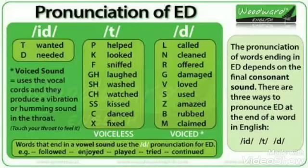This is assimilation of voicing — the coordination of voicing. Voiceless is followed by voiceless, voiced is followed by voiced. If the verb ends with a voiceless sound, we use the voiceless T, like 'helped'. If it ends with a voiced sound, we use the voiced D, like 'called'. Thanks a lot.